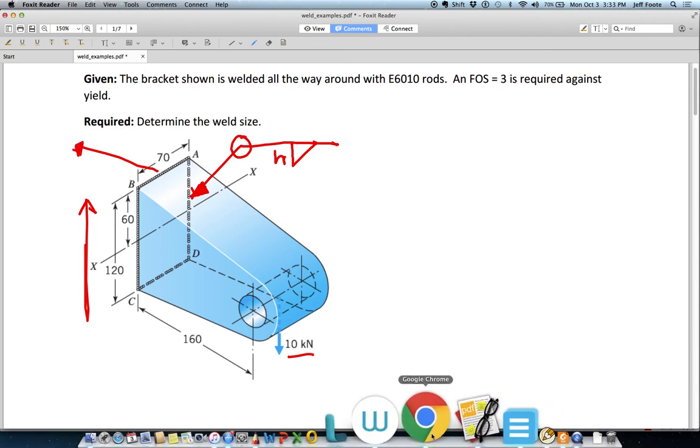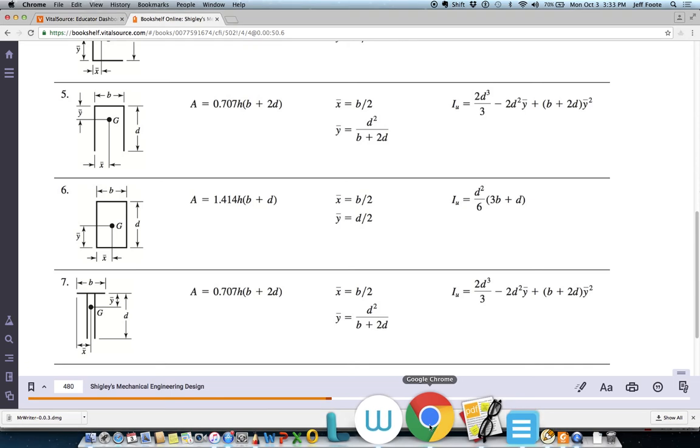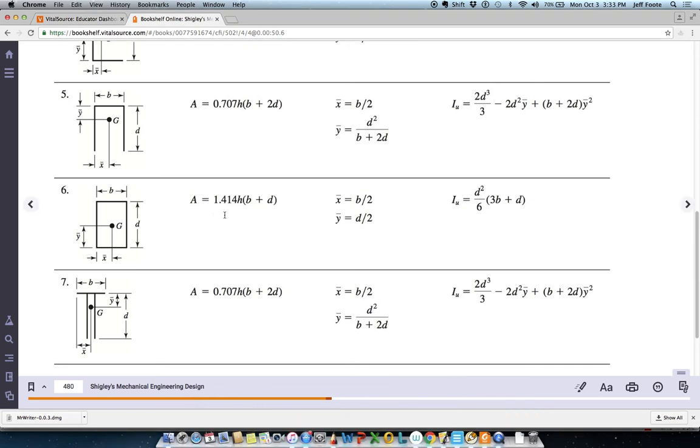And what we're going to need now is just a couple of properties. The area. This is Table 9-2 in Shigley for a rectangular weld section, where B is the narrow edge, D is the top edge. And then the second unit area moment here is given, and the area value is also given. You can see that the area is dependent on that weld height, H.